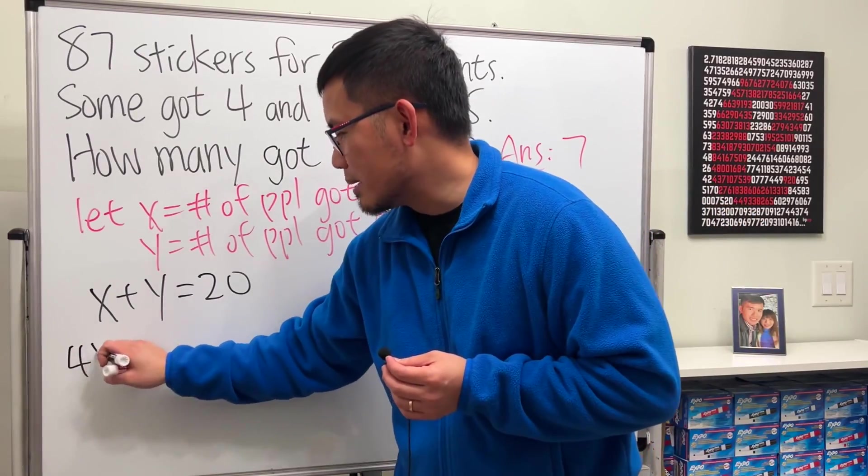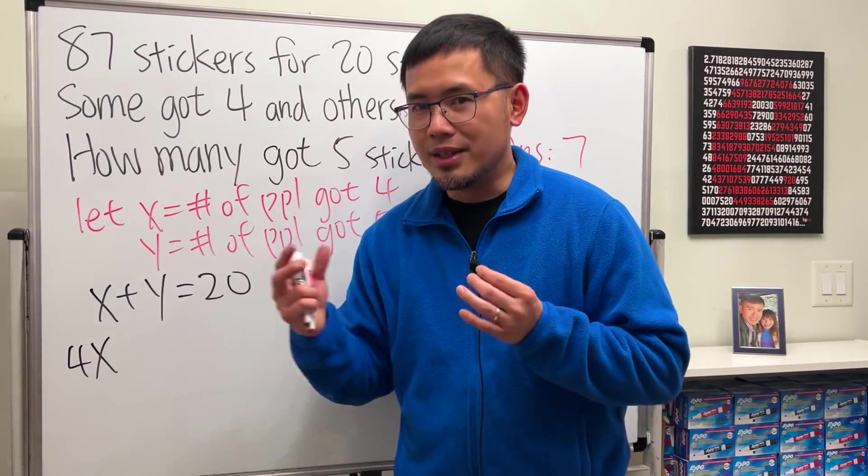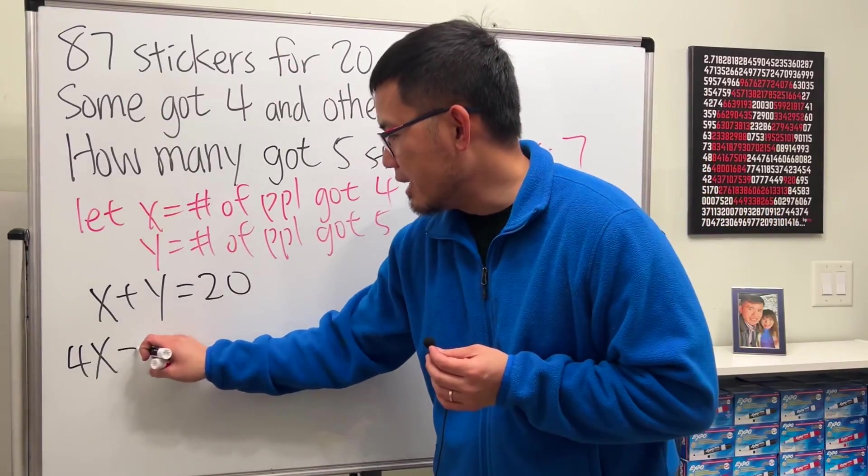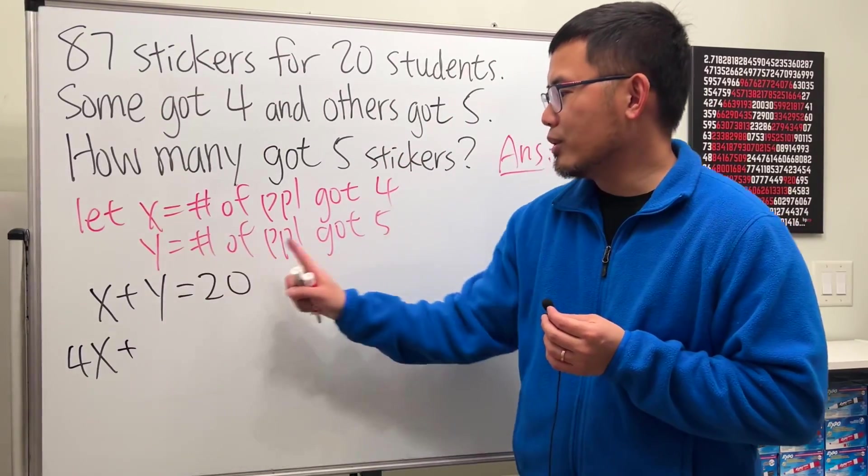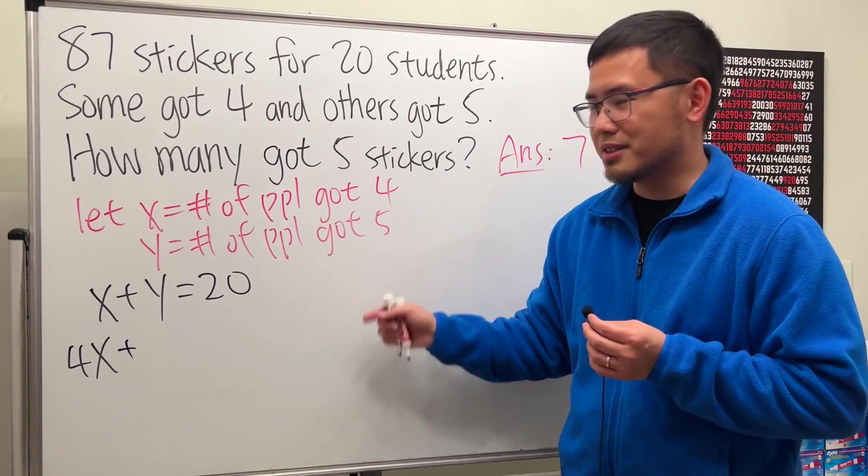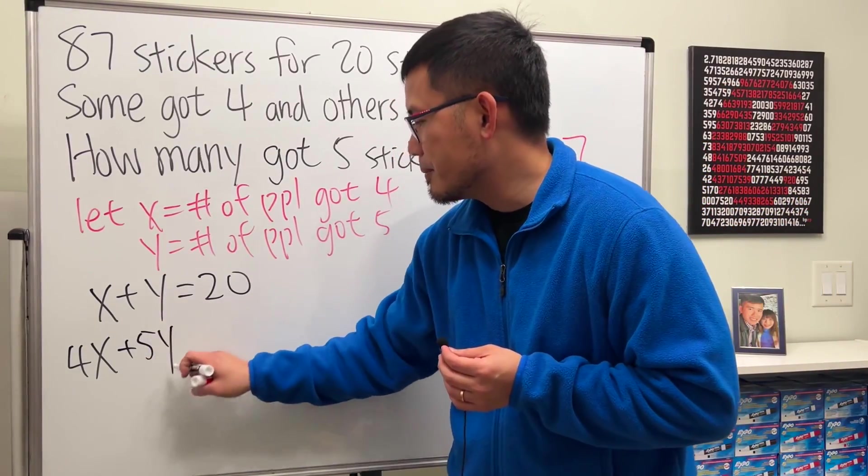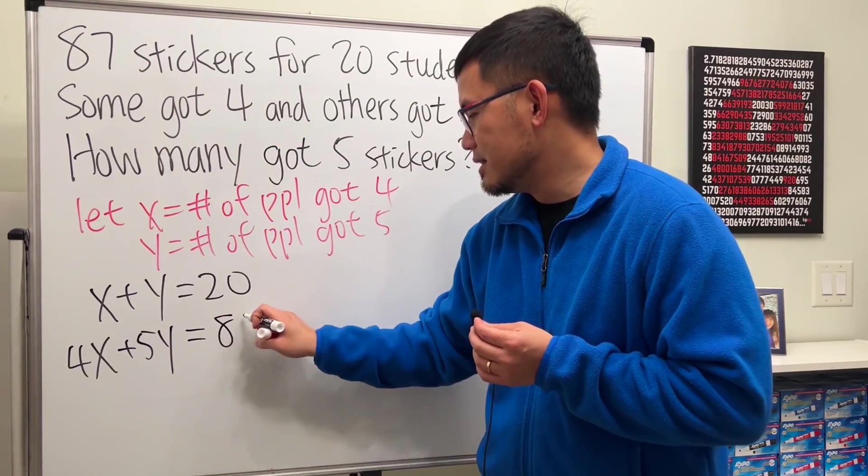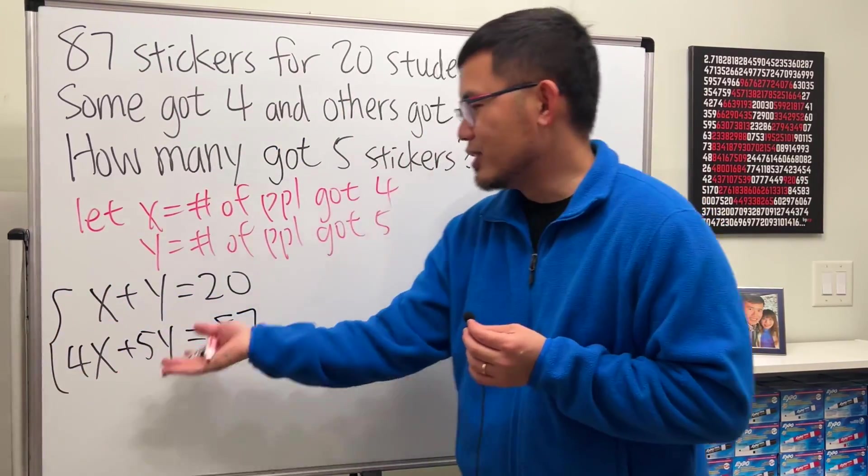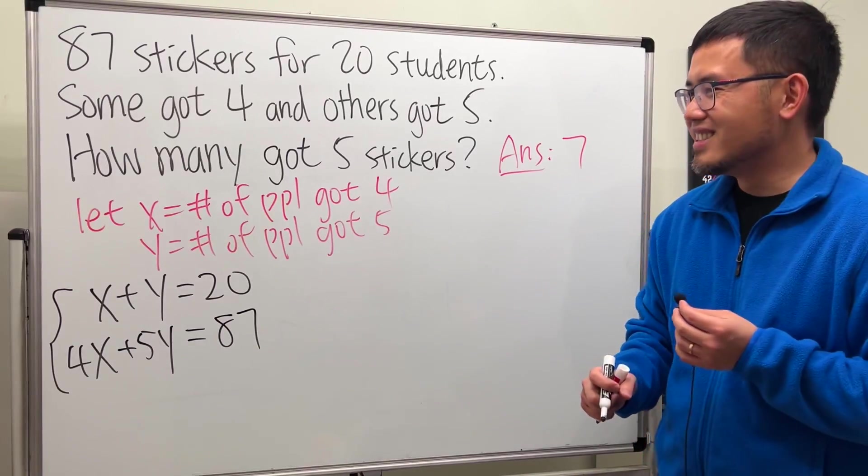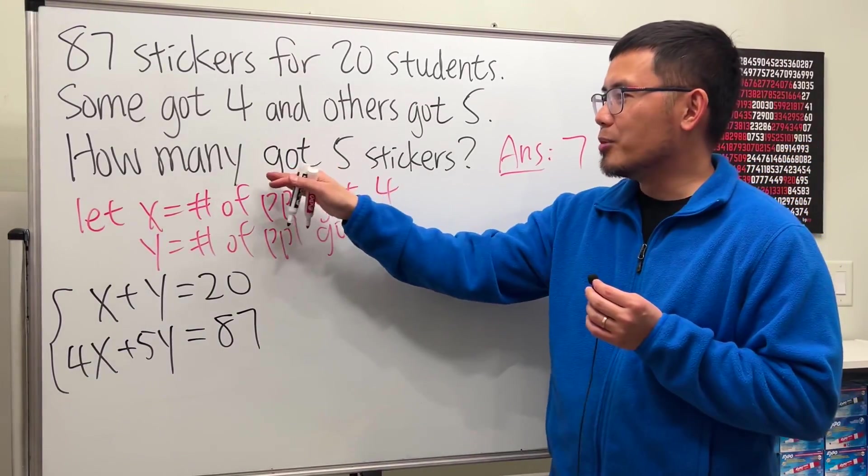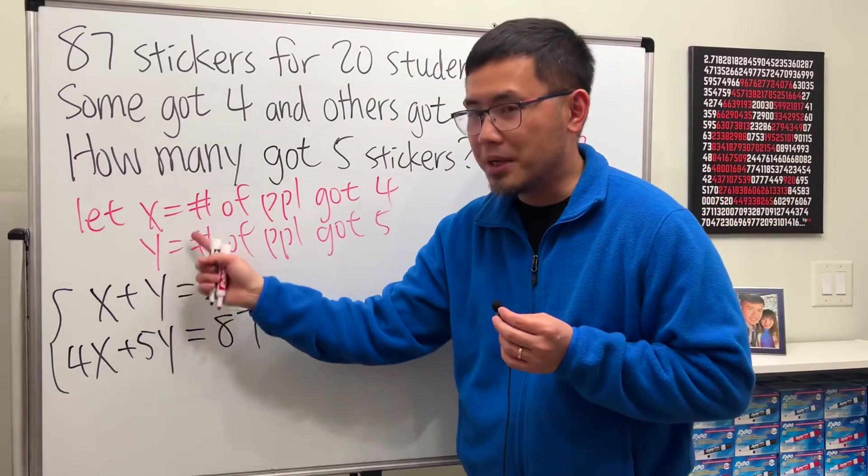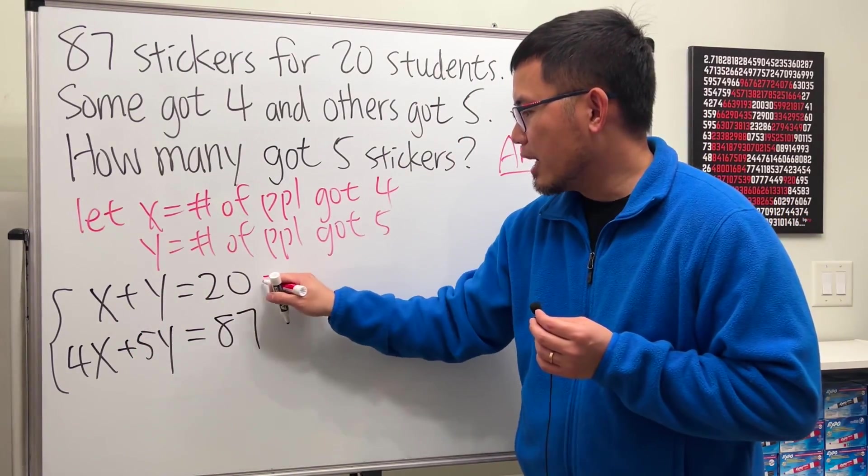And for the second equation, because we have X many people who got four stickers, so we have to do four times X. This will produce the number of stickers that they all have right here. And then we have to combine Y many people got five stickers, so just 5Y. Altogether, the amount of stickers is 87. And ladies and gentlemen, that's the system of equations.